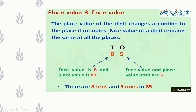Here we are given the number 85. 5 is in the 1's place and 8 is in the 10's place. Face value of 8 is 8 only — it may be in the 10's place, but its face value will never change. Place value of 8 is 8 × 10, which equals 80.